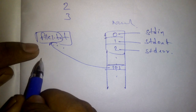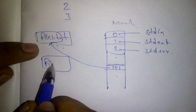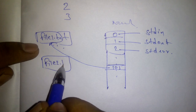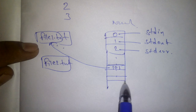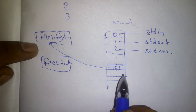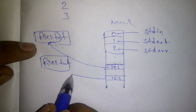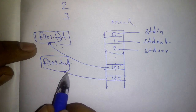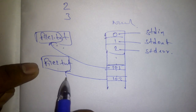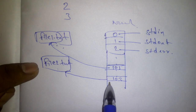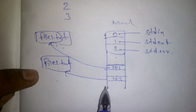Whenever another file is opened — file2.txt — another entry is created in the table, say with file descriptor 103, and it contains information about file2.txt. If we open many files, each gets a different file descriptor number.